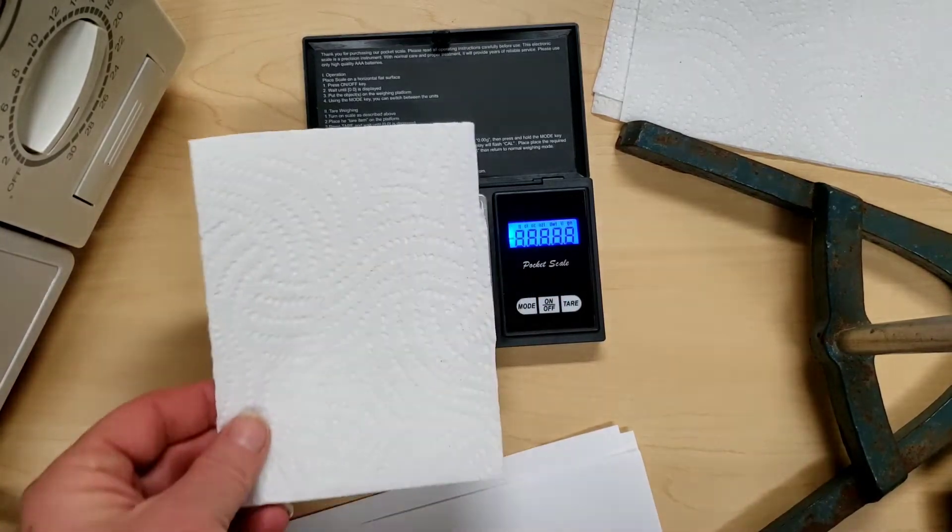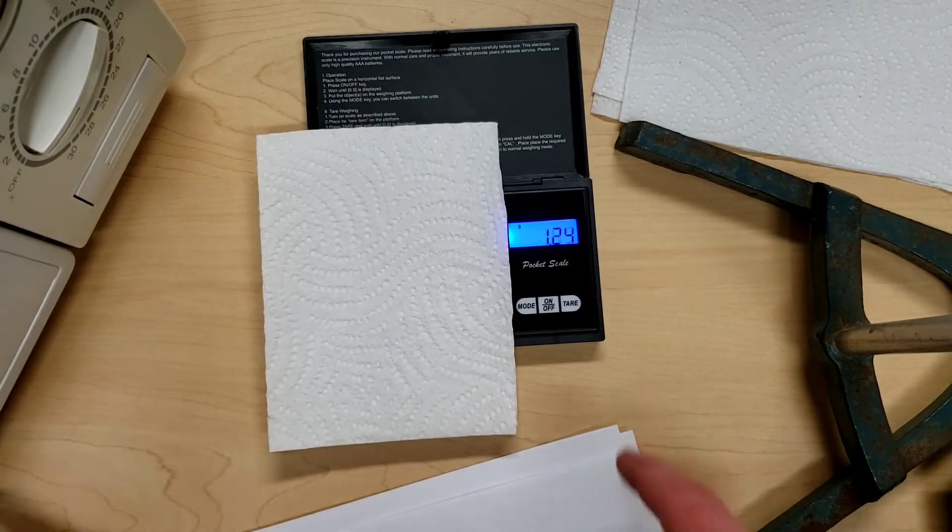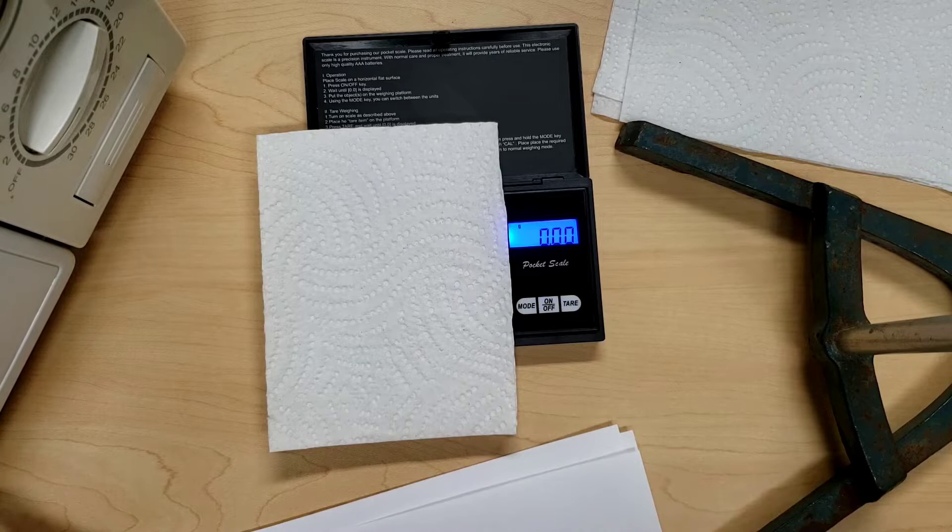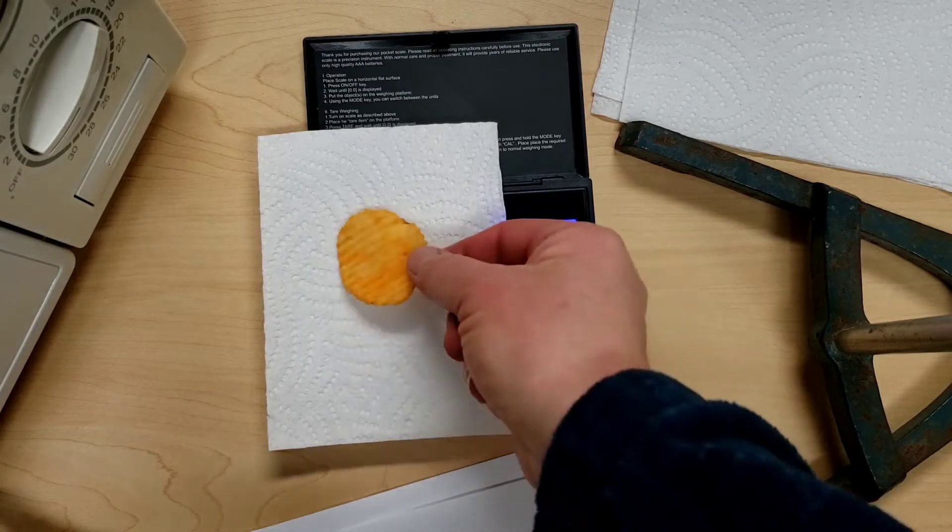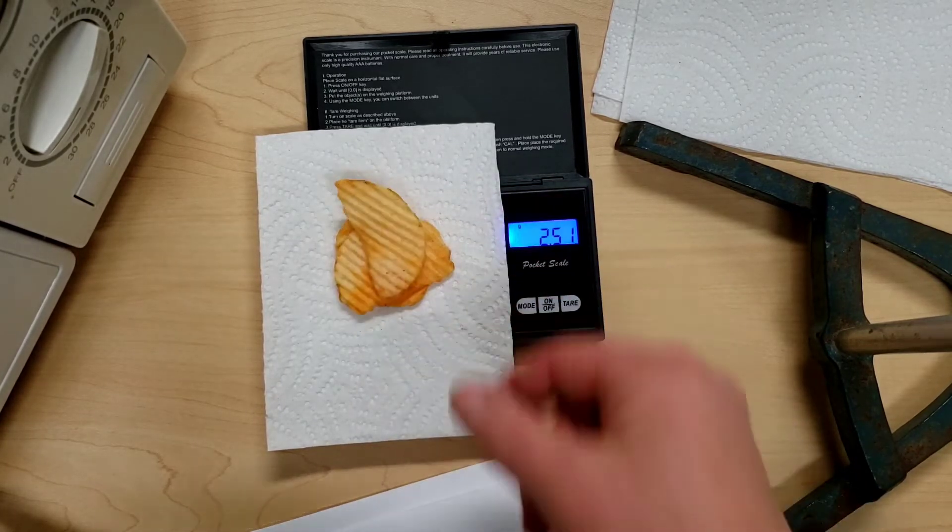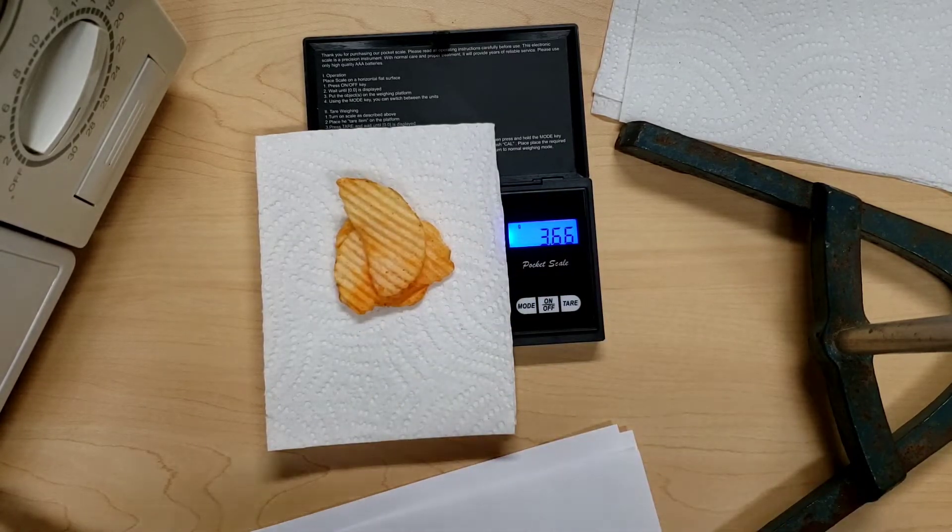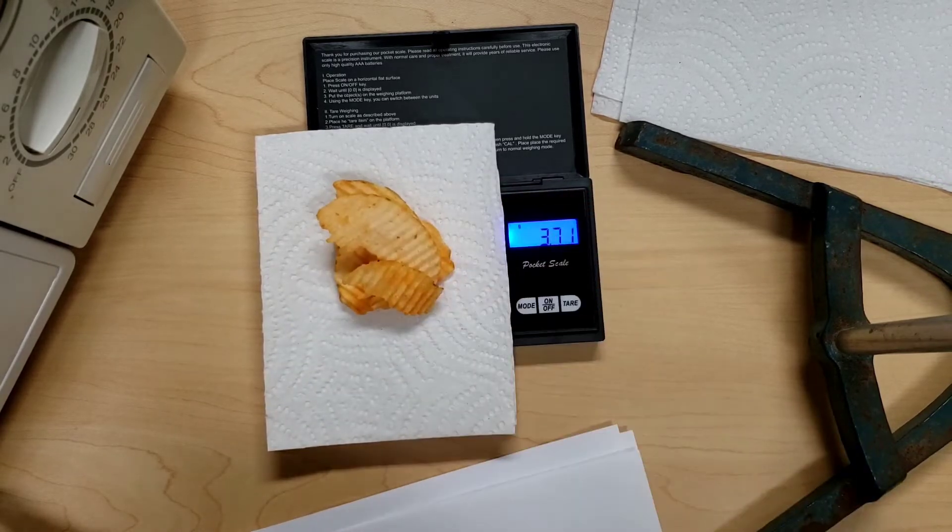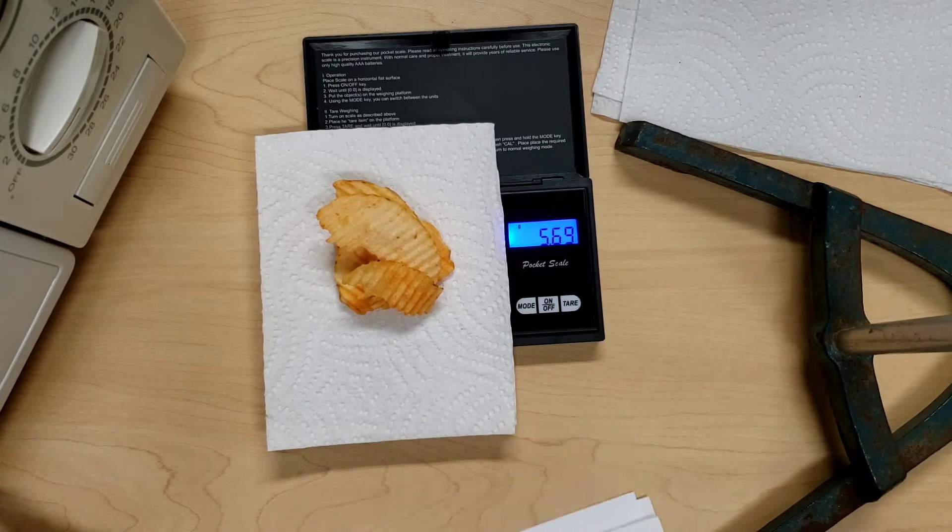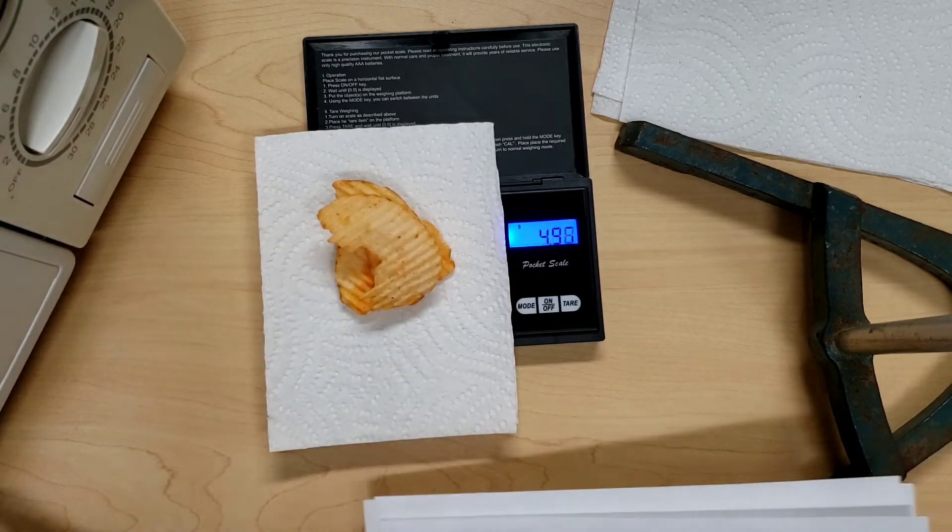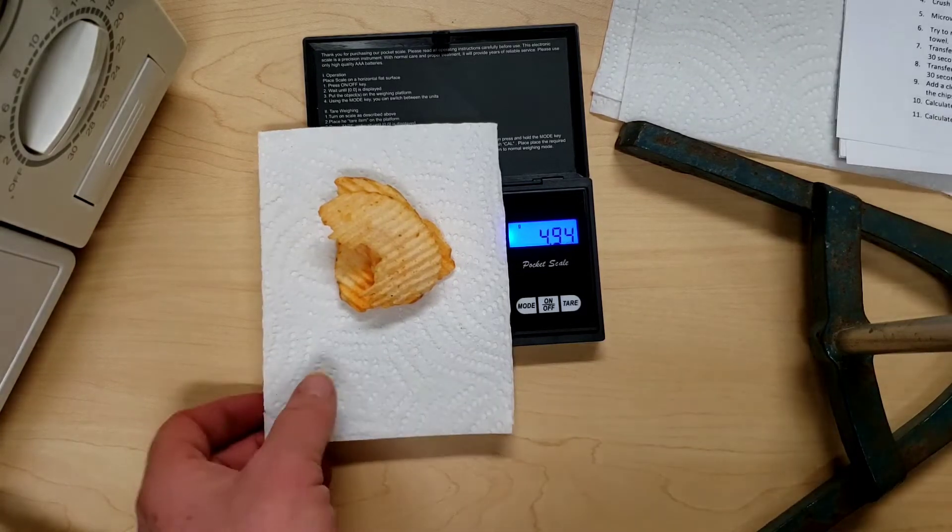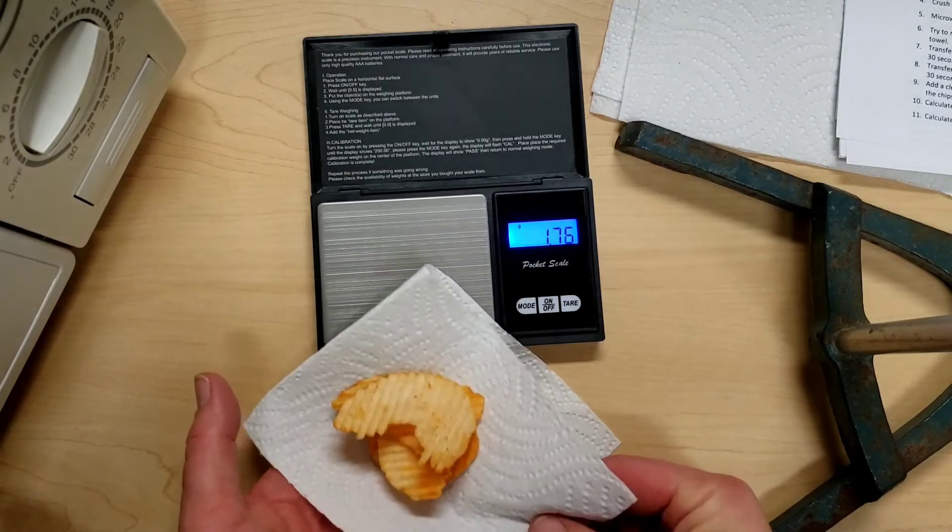We want to turn our balance on. We want to get the weight of paper towel, and we don't want that included with our chips, so we're going to zero it. We put the chips on - we want about five grams of chips. So we want to make sure we record the exact amount.